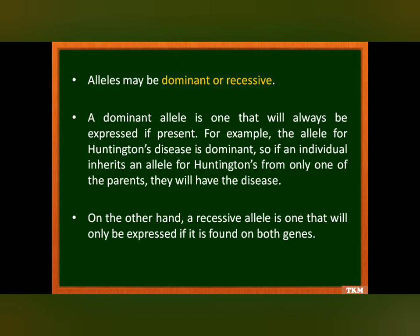Alleles can be dominant or recessive. A dominant allele is the one that will always be expressed if present, either alone or with another dominant allele. For example, the allele for Huntington's disease is dominant — so if an individual inherits an allele for Huntington's from only one parent, they will still have the disease. Whereas a recessive allele will be expressed only in the presence of another recessive allele — that is, if it is found on both genes.